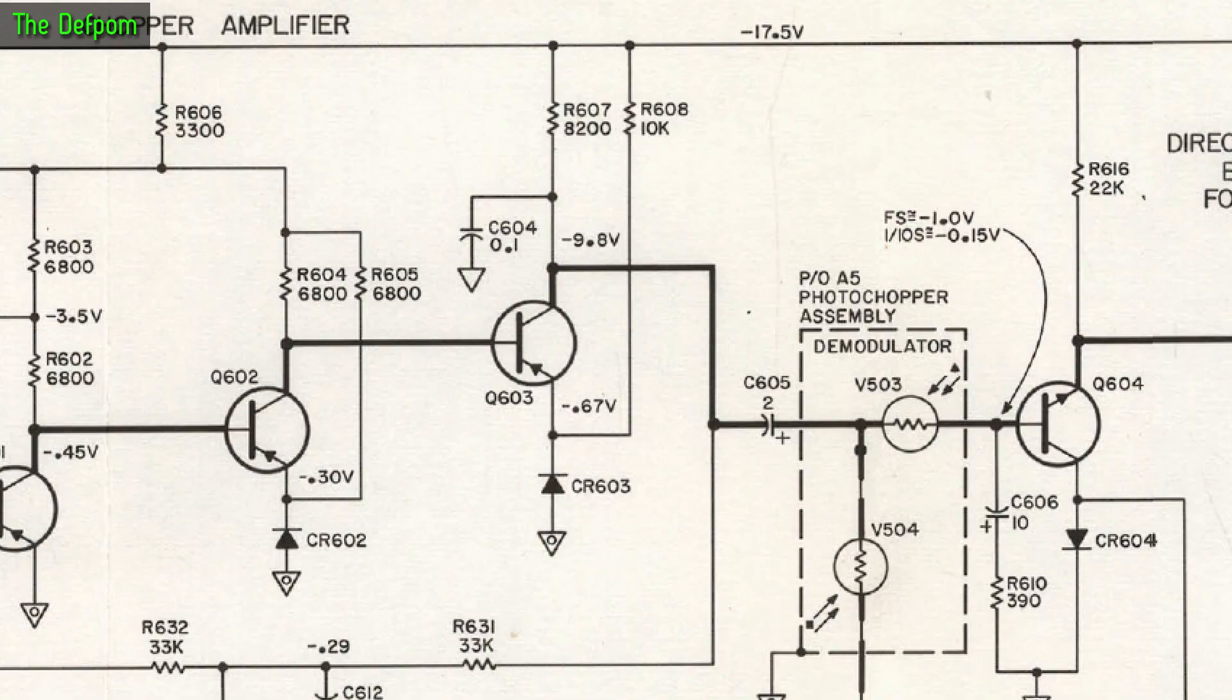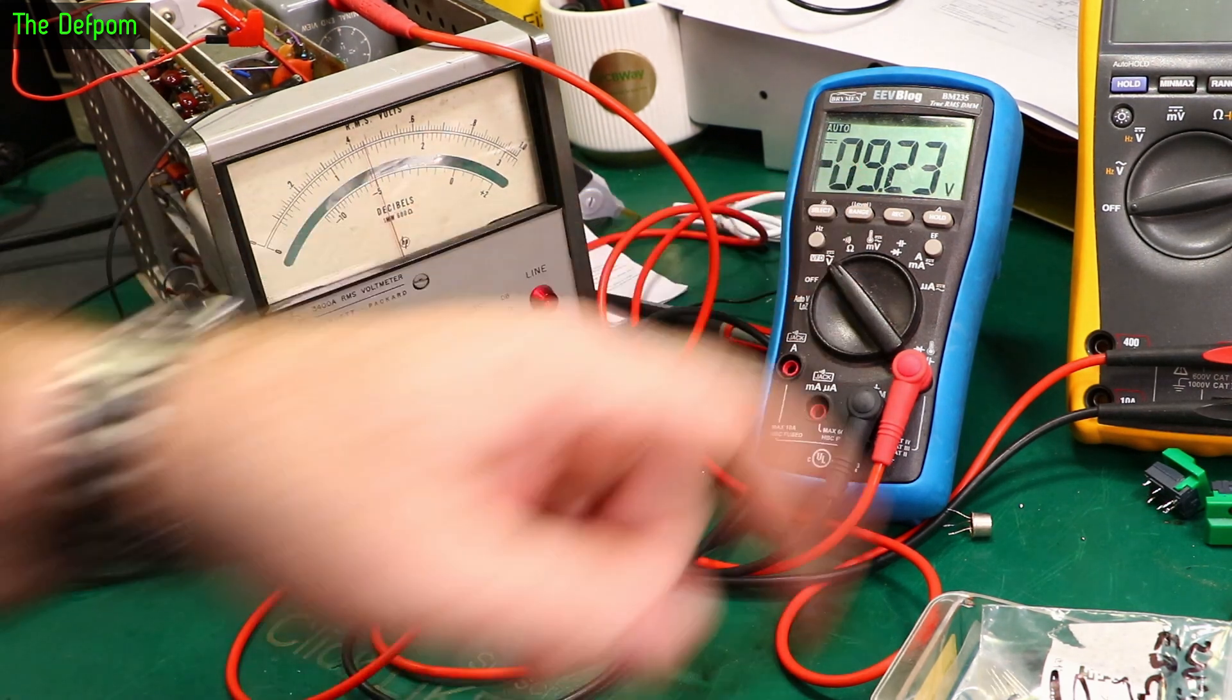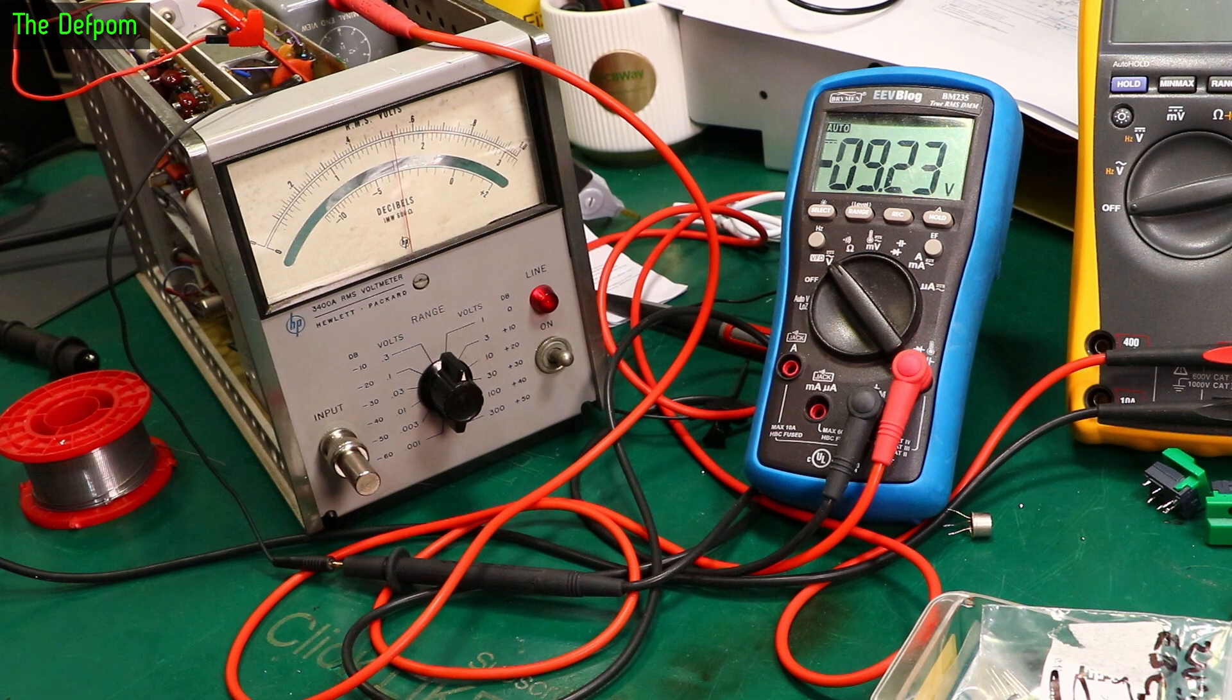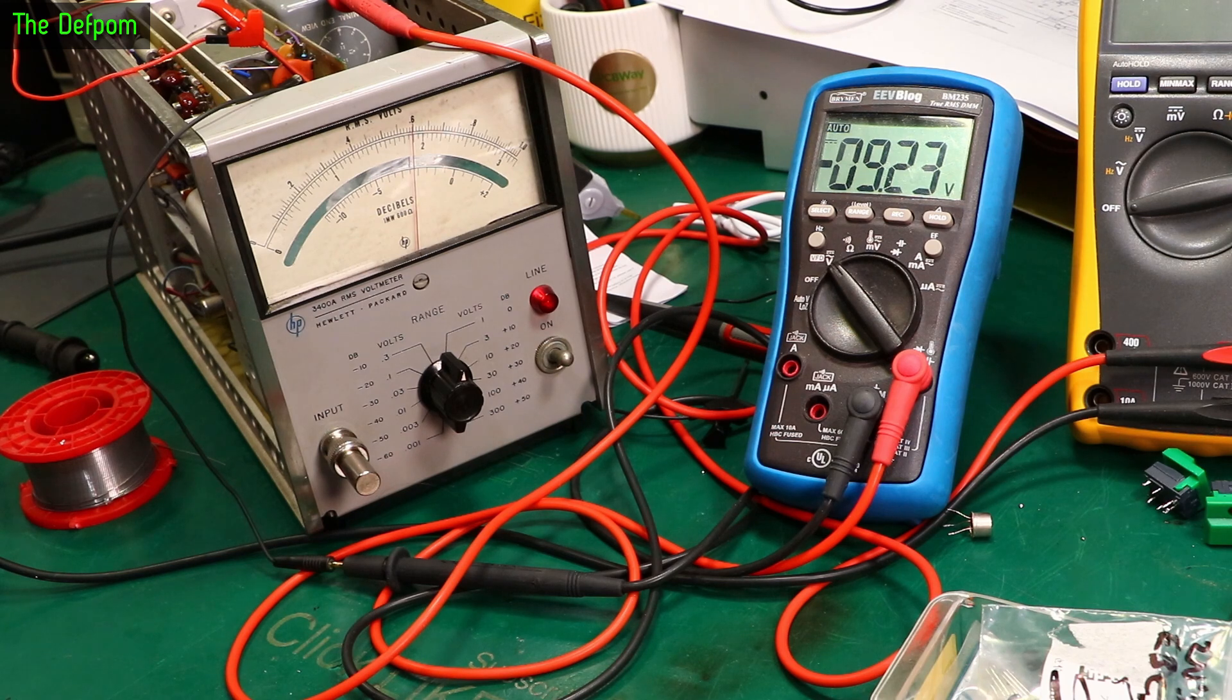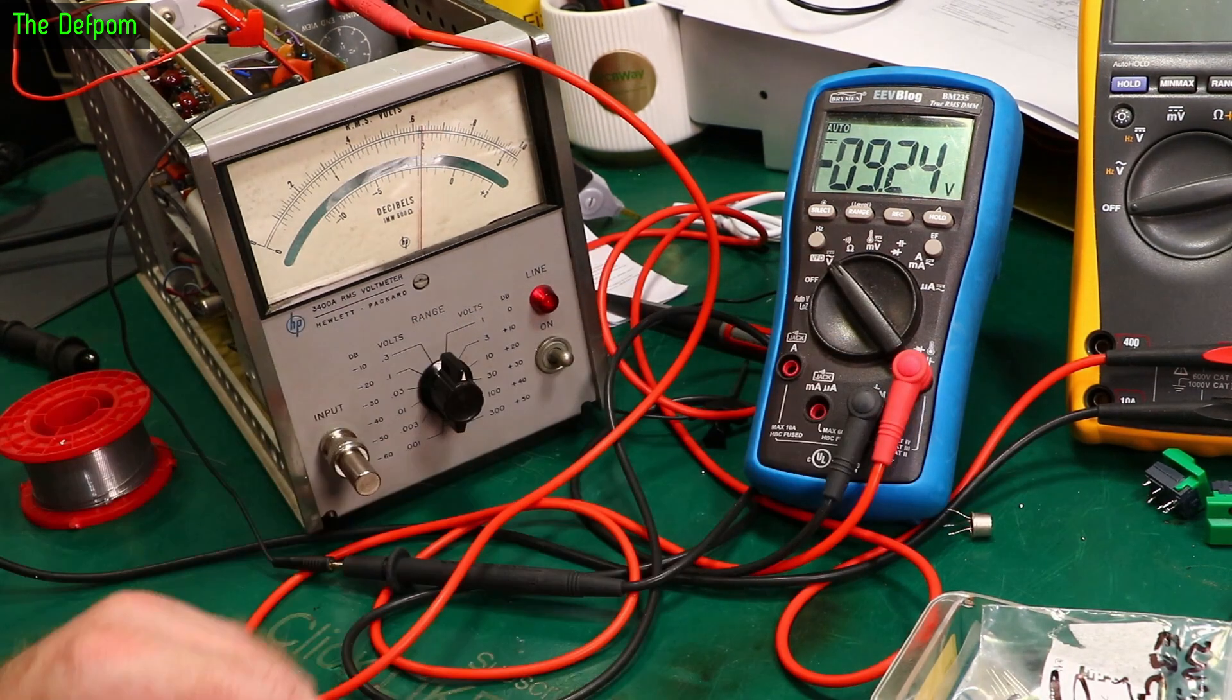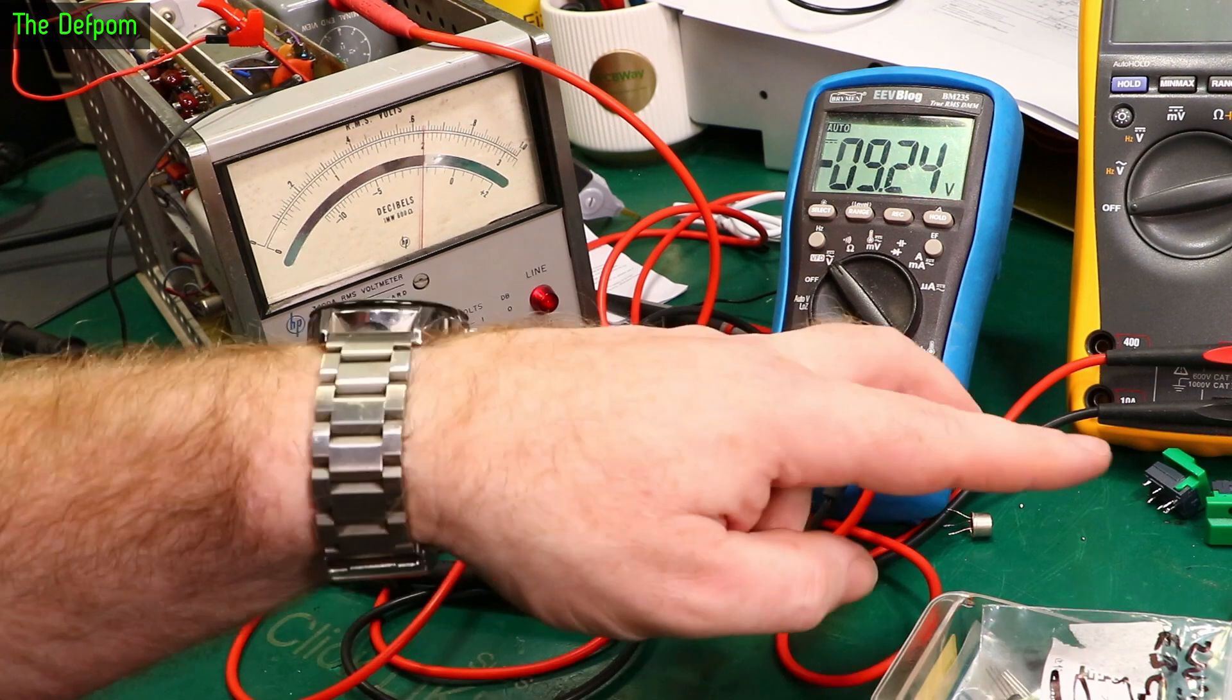But it's still working. That's that 9.3 volts I was getting before, minus 9.3. So it's still reading low. Let's go back and do the one before that. I've now replaced Q602. Let's try this again. See if it's any different. Looks the same. Not that then. So as it wasn't either those two transistors, I'm going to put the original two back in again. Those two transistors are probably fine.